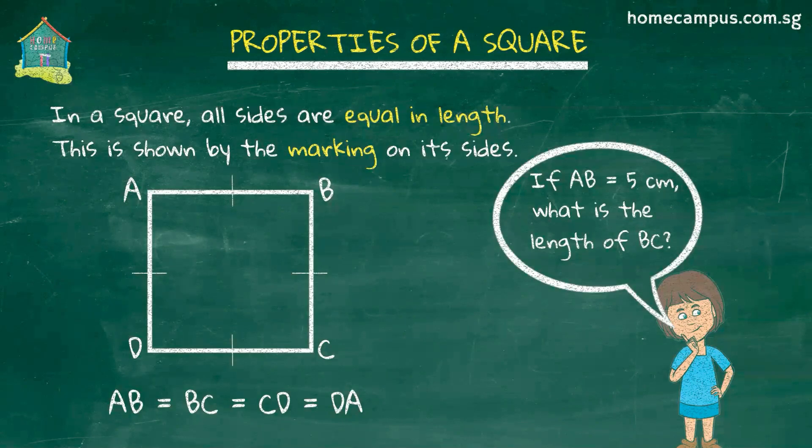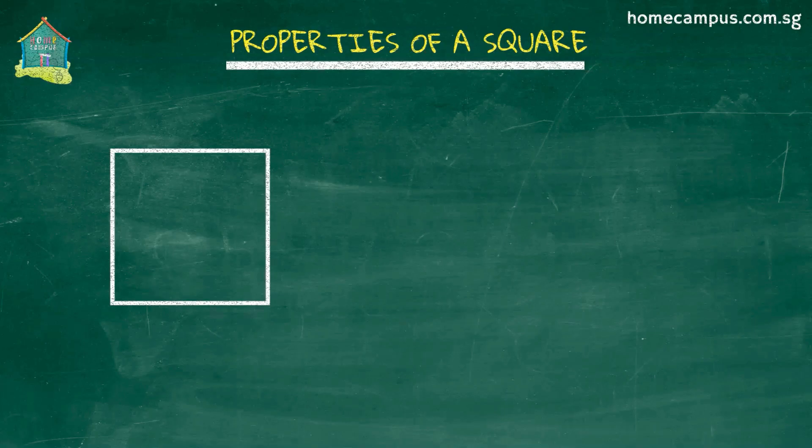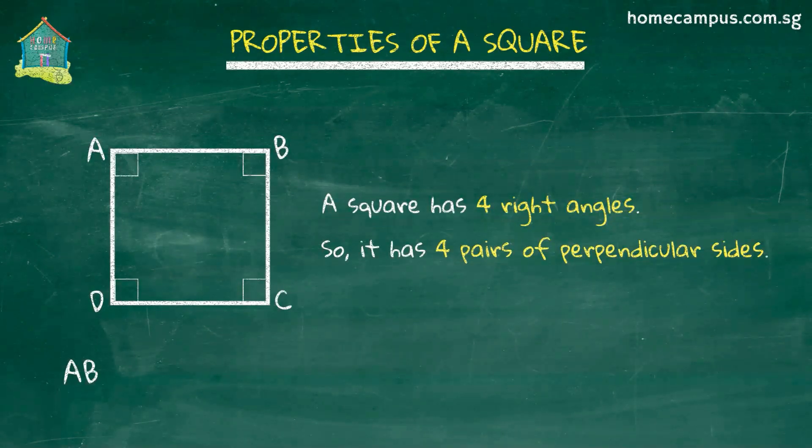The second property of a square is that it has four right angles. This means that it has four pairs of perpendicular lines. In this square, AB is perpendicular to BC, BC is perpendicular to CD, CD is perpendicular to DA, and DA is perpendicular to AB.